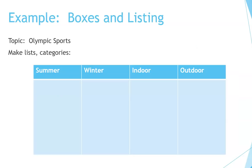Here are some examples of graphic organizers. This one is boxes and listing. Let's say your topic is Olympic sports — there are so many different kinds. You can make lists of summer sports and winter sports, and categorize them into indoor sports or outdoor sports. This is an exercise in helping you see how things fit together, then you can choose which ones you want to talk about.